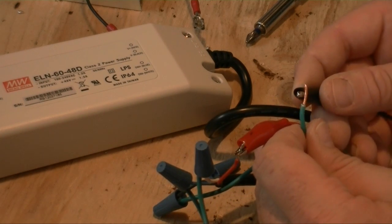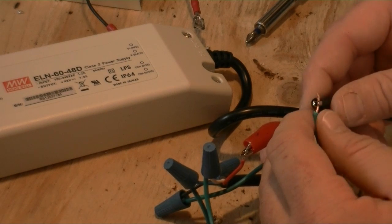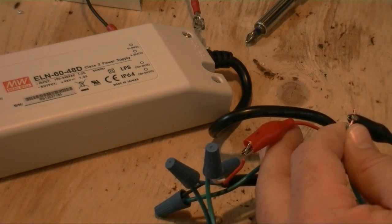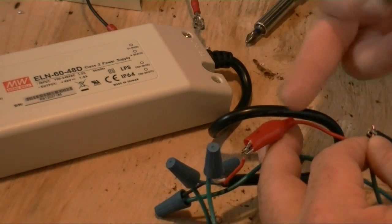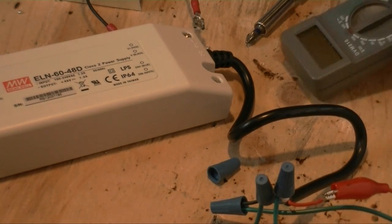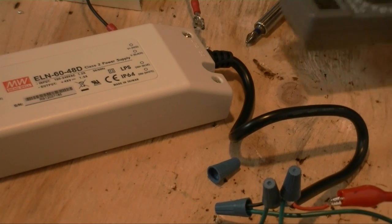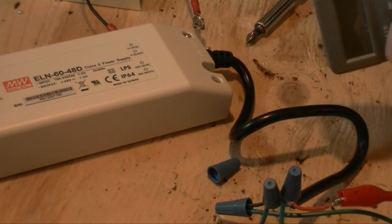My multimeter negative is going to go to the connection that goes to my positive first LED, my first LED positive. So now my multimeter is connected in line with the positive from the driver to the first positive on the LED.